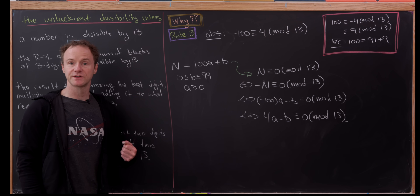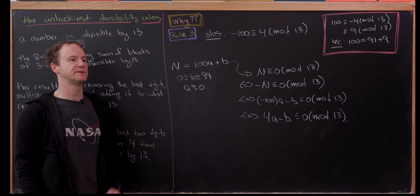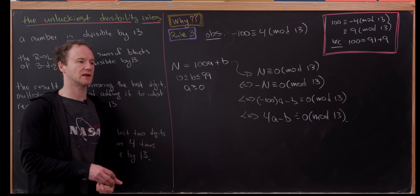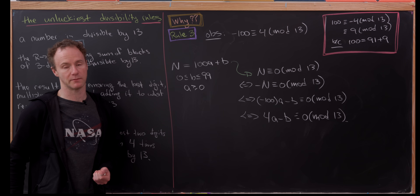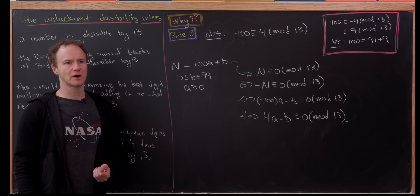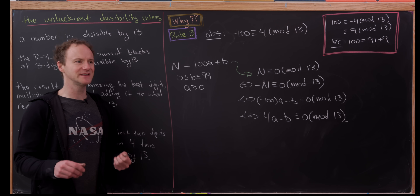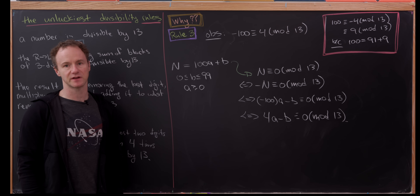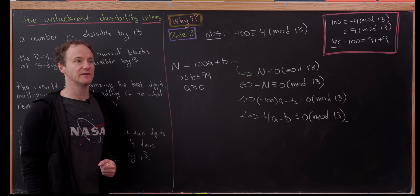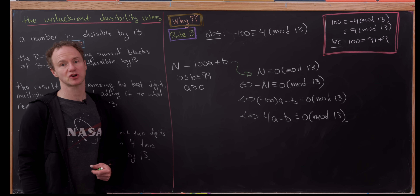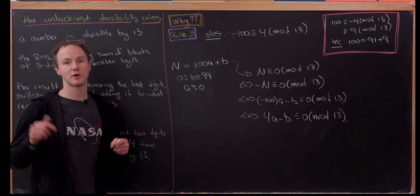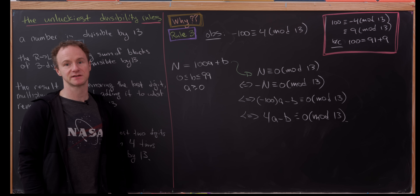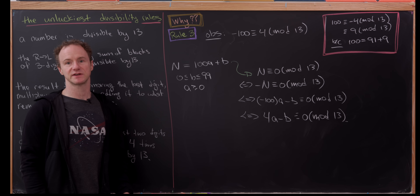So there we have it — three rules for divisibility by the unluckiest number. There are strange divisibility rules for all sorts of numbers; if you know any really contrived ones, post them in the comments. And that's a good place to stop.